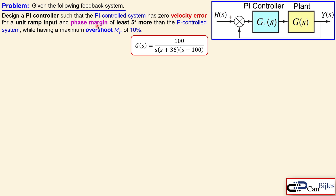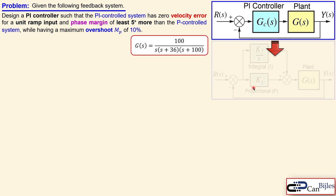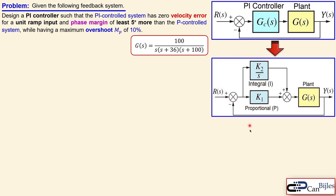For the phase margin we will look at the P control system first and then decide how much we need to add using the PI controller, still of course having a maximum overshoot of 10 percent. Before we move on, let's also discuss what the PI controller is in diagram format. We have of course the proportional part but also the integral part, and that combined in parallel makes this PI controller.